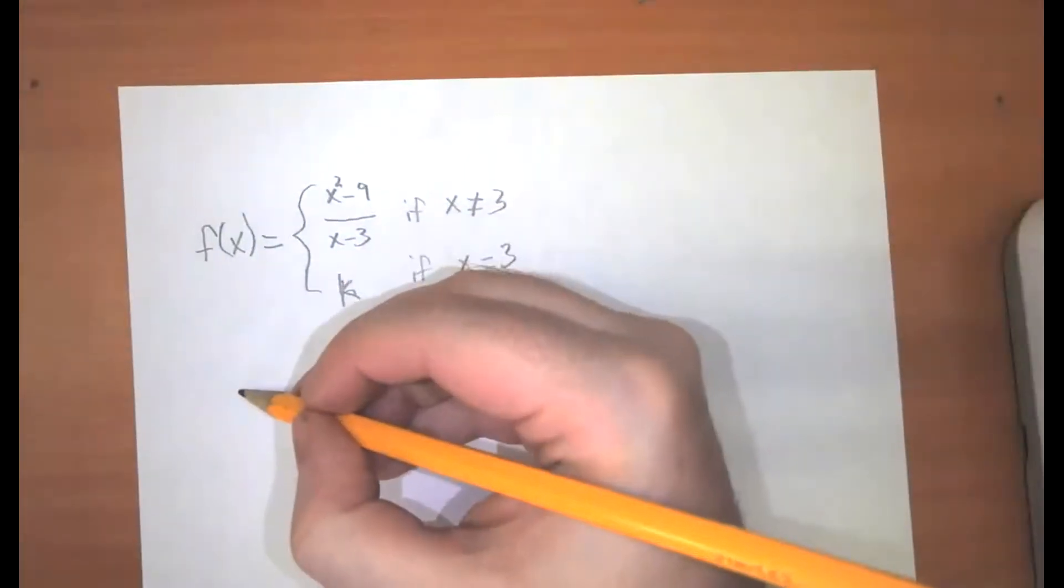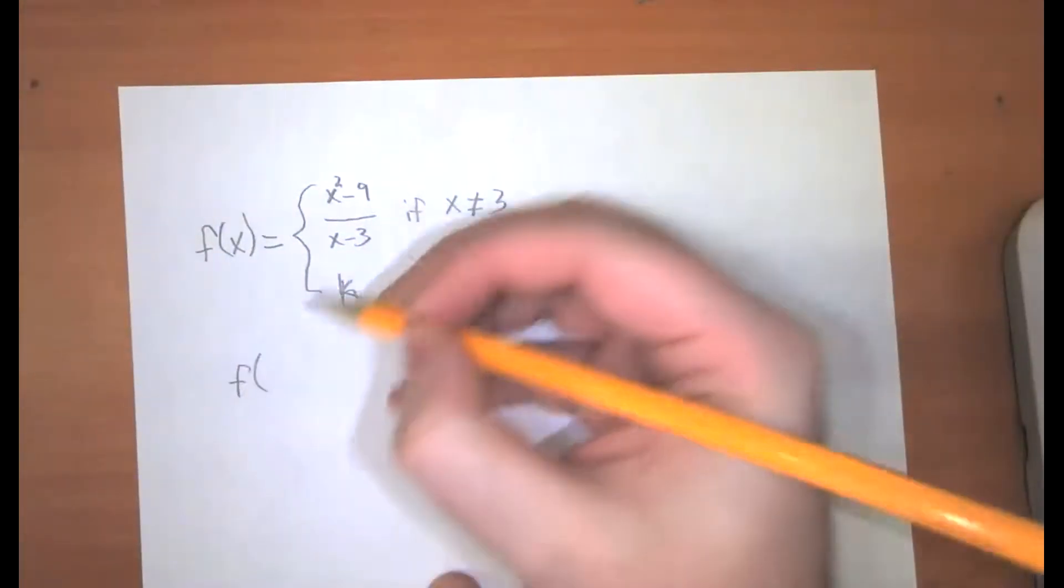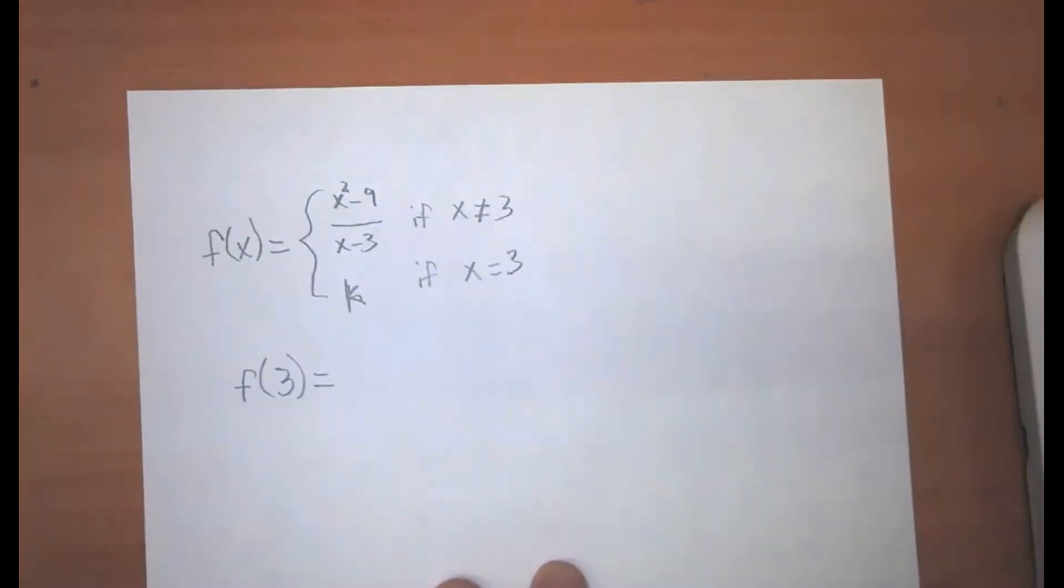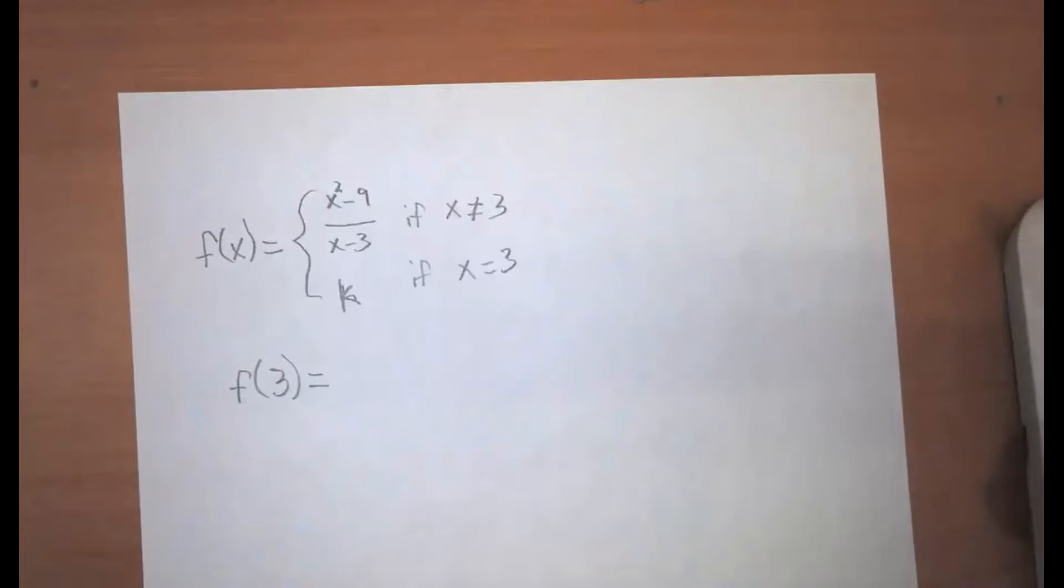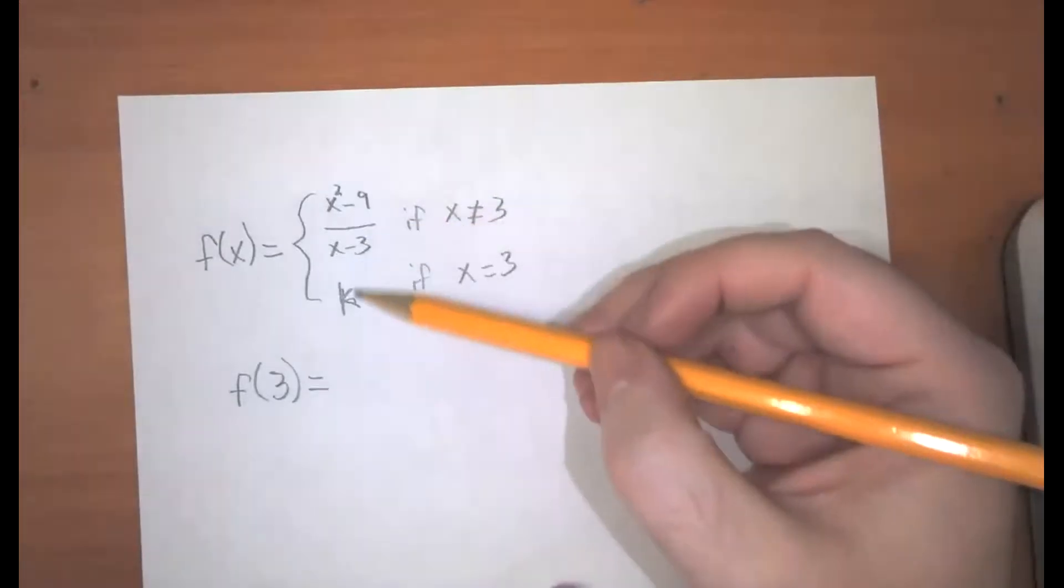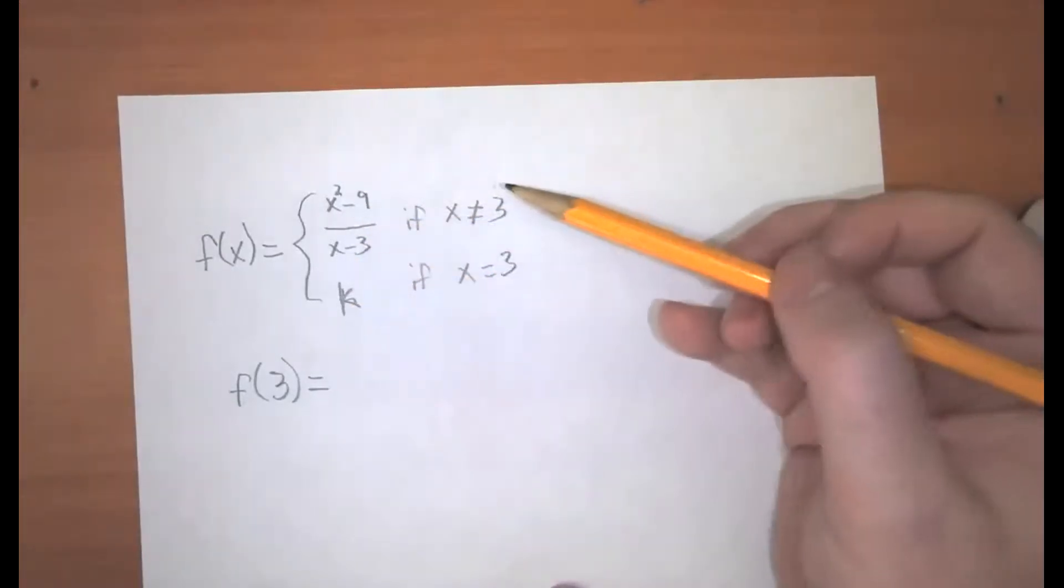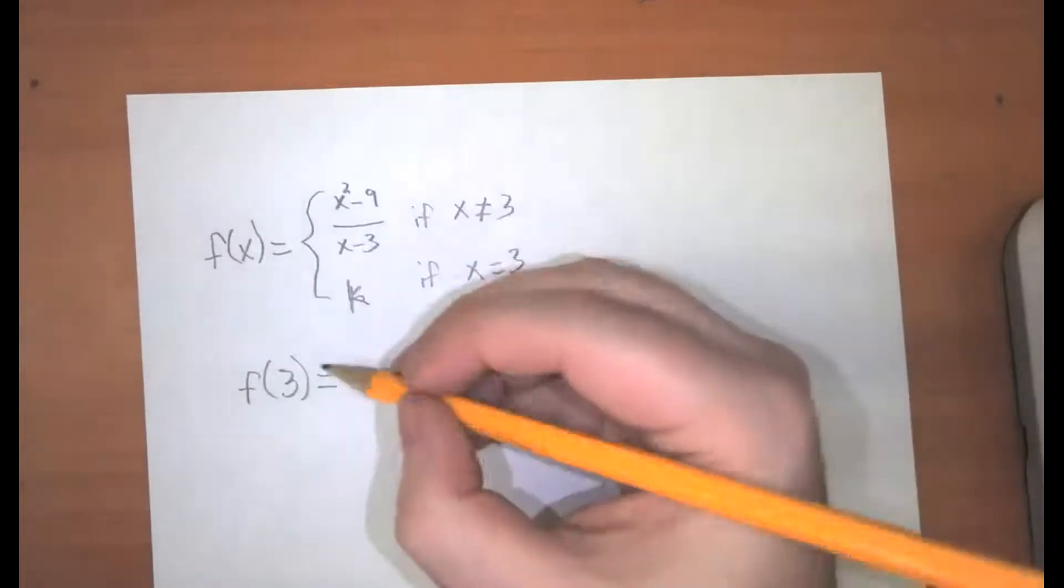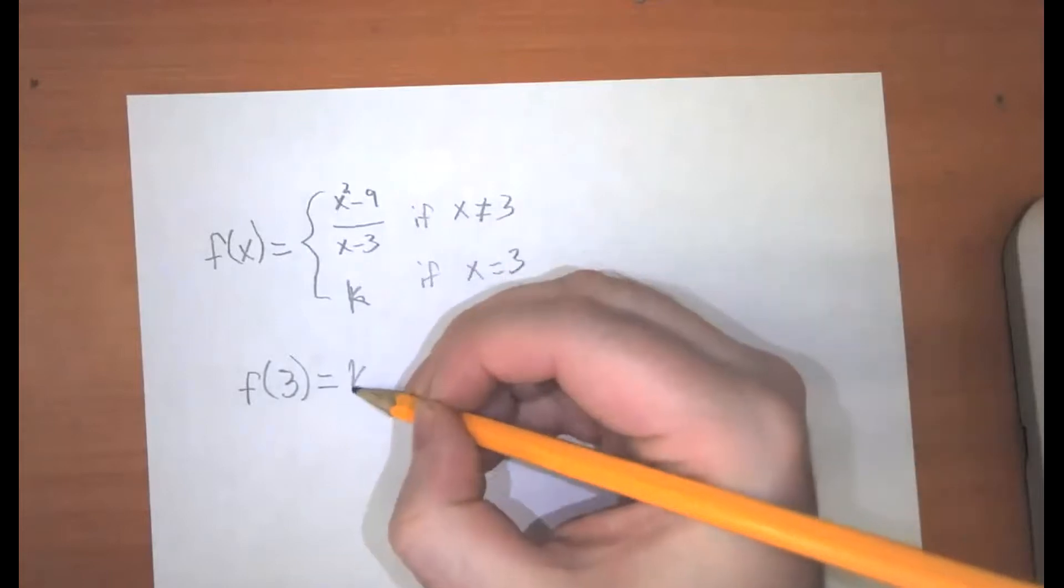We can take care of the second problem first, that f of 3 is equal to what. Do you remember how piecewise functions work? We've got these two rules, and we need to figure out which one to apply, but the input is 3, and what we're going to use is the bottom one. So f of 3 is equal to k.